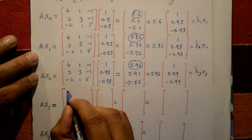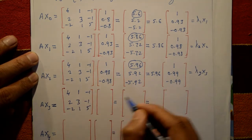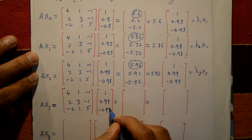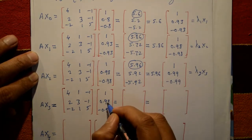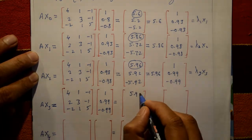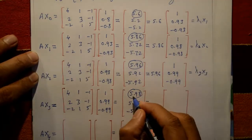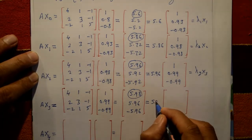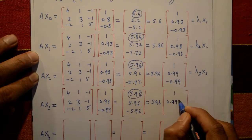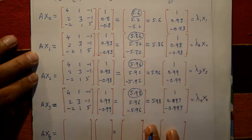Fourth iteration: compute A·x3. Matrix A = [4, 1, -1; 2, 3, -1; -2, 1, 5] and x3 = [1, 0.99, -0.99]ᵀ. The row multiplications give elements 5.98, 5.96, -5.96 respectively. The largest element is 5.98; taking it as common factor gives inside [1, 0.997, -0.997]ᵀ. This gives λ4 = 5.98 and x4 = [1, 0.997, -0.997]ᵀ.